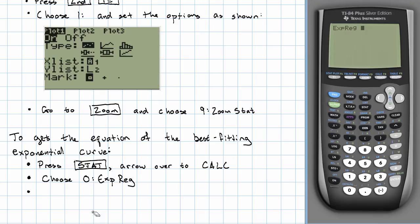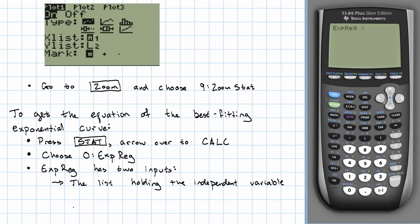Now, ExpReg is going to take two inputs. They're the list that holds the independent variable and the list holding the dependent variable, in that order.